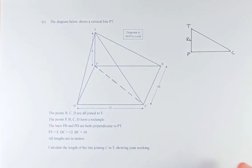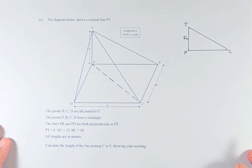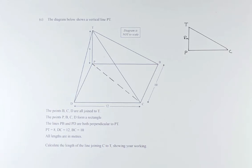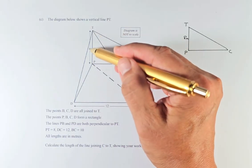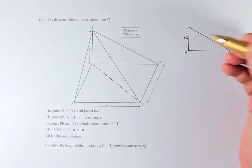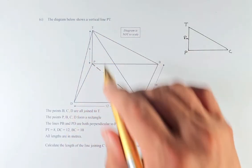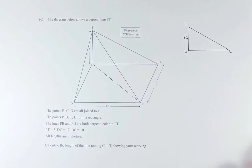So you can look at it. This is actually three-dimensional trigonometry. You can see that there's a cone and we are going to calculate the triangular cone. The diagram below shows the vertical line PT. This PT is 8 meters. So we're going to put that PT is 8 meters. The points B, C, D are all joined to T.